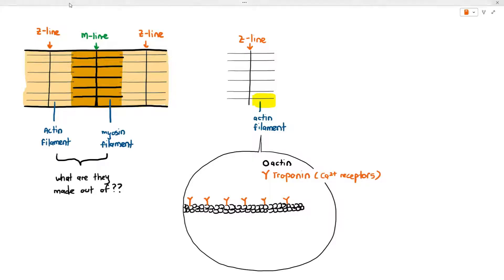To complete the actin filament they must also have something called tropomyosin. Tropomyosin is just this fibrous protein which is usually like a linear shape. Different books will represent the tropomyosin in a slightly different way.